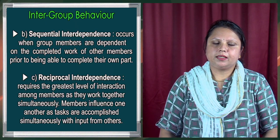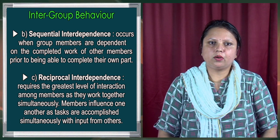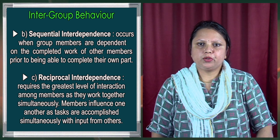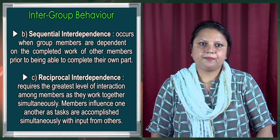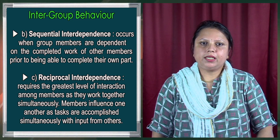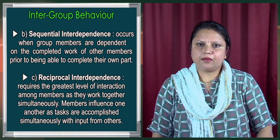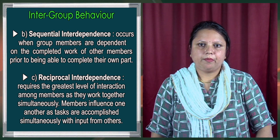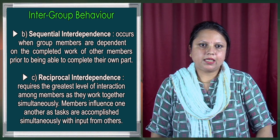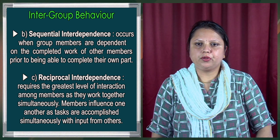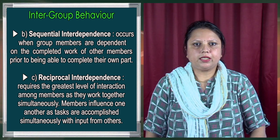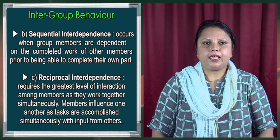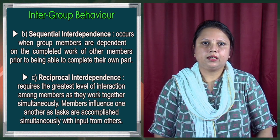Sequential interdependence occurs when group members are dependent on the completed work of other members before being able to complete their own part. Then comes reciprocal interdependence, which requires the greatest level of interaction among members as they work together simultaneously. Members influence one another as tasks are accomplished simultaneously with input from the others, meaning each member interacts with others simultaneously and decisions are taken during that interaction.